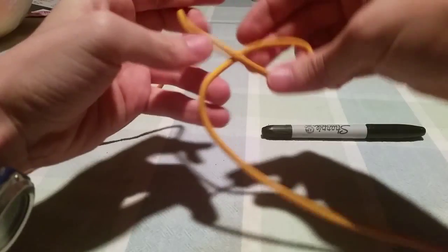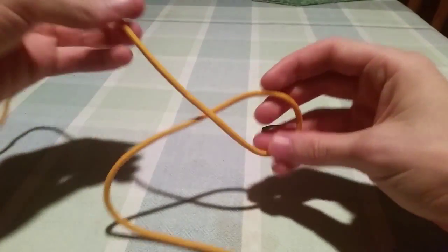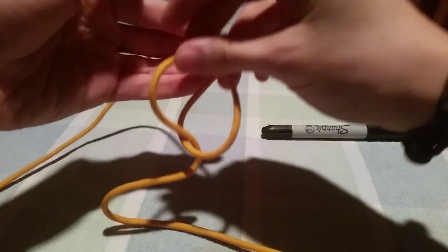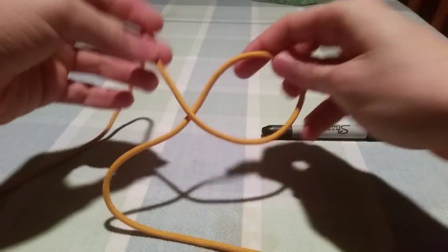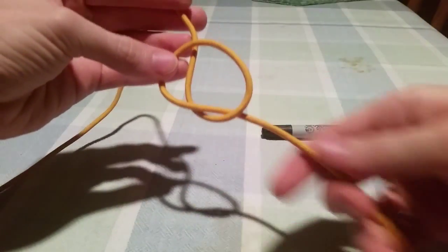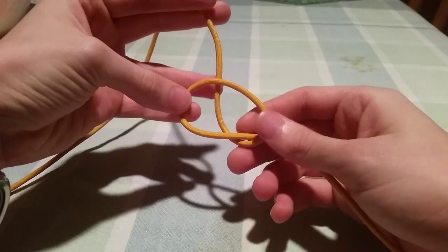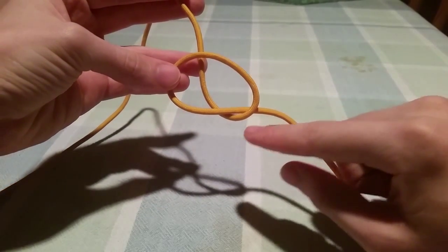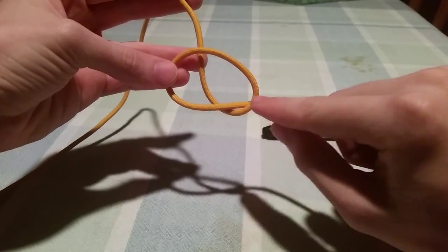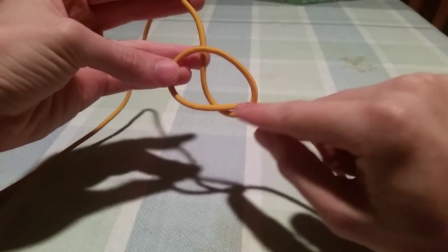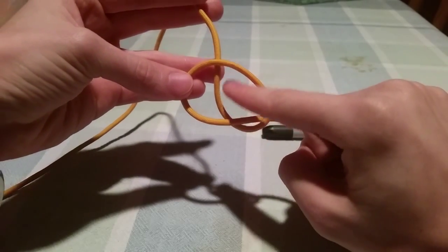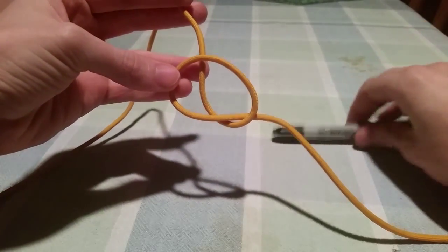then when you make your eye, it doesn't matter what direction it goes, because you're just going to have to cross it over. It won't cross over this way, it'll just splay apart. So there's really only one way to do that. You have to make sure that the complicated crossing is away from the load, and the simple crossing is towards the load.